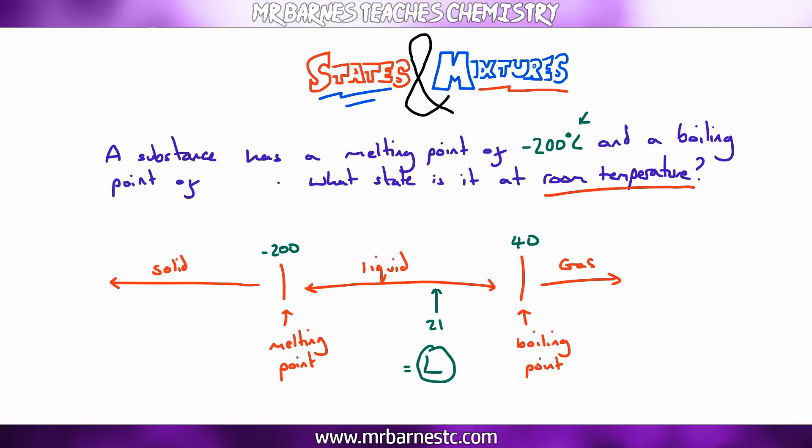And then finally, if it melted at minus 200 and boiled at 10, 21 is above 10, therefore it's going to be a gas.